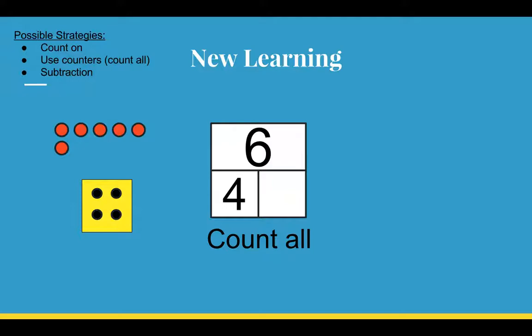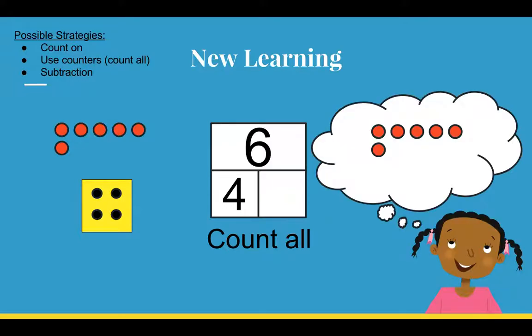Now to use counting all, I'm going to flip some of the counters over so that they match the 4 on the dice, or the part that I already know, to figure out what the part I don't know is. So in my head I've got my 6 counters. I flip 1 over, 2,